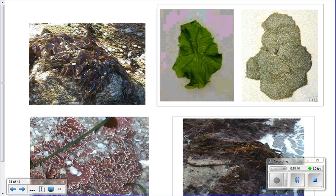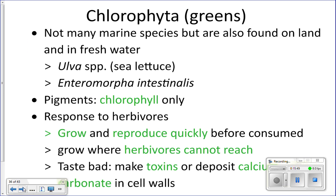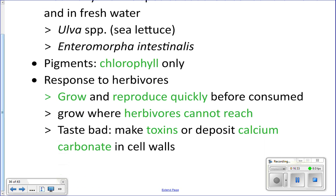Chlorophyta, or green algae, are not very common in the ocean — they are typically freshwater or land species. The two most common marine species are sea lettuce and enteromorpha, which is a stringy-looking algae. Their pigment is chlorophyll, which is why they look green.